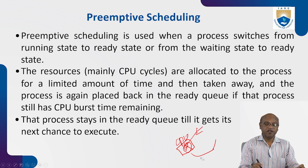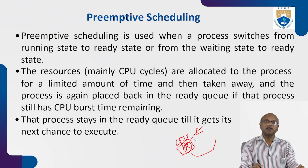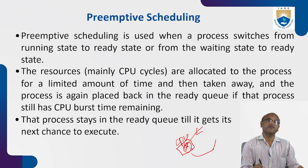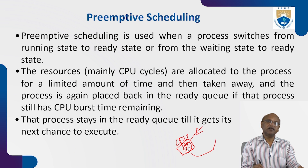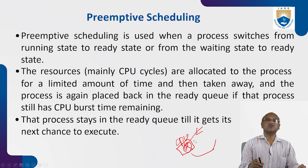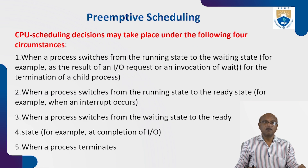CPU cycles are allocated to a process for a limited amount of time and then taken away; the process is placed back in the ready queue if it still has CPU burst time remaining. Once you start executing a process and then stop it, you send it to the waiting queue while a high-priority job executes. After the high-priority job completes, the previous job is brought back to the CPU and resumes from where it stopped. The process stays in the ready queue until it gets the next chance to execute.